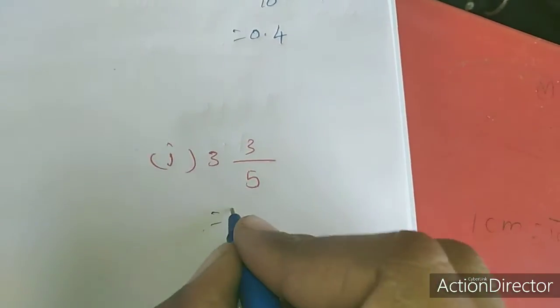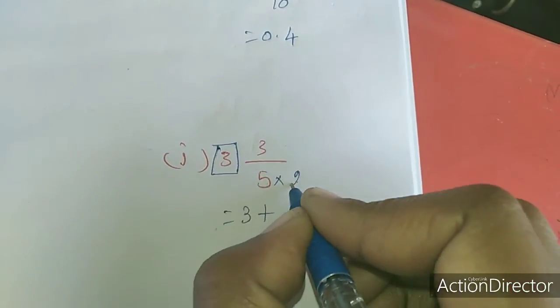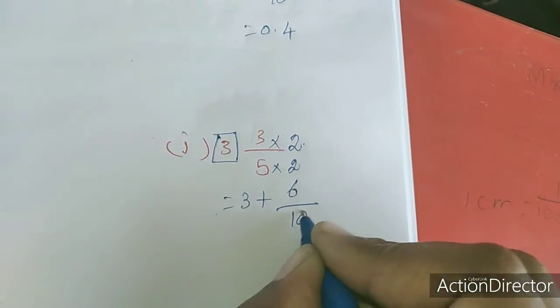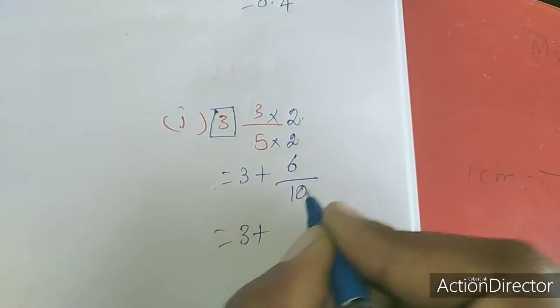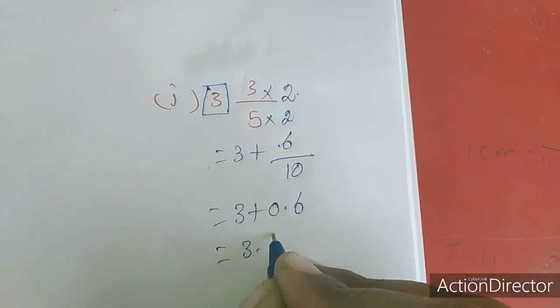Here it is 3 plus this number. Multiply by 5, 2 times 5 is 10, 3 times 2 is 6. 5 times 1 is 5. So 3 plus 0.6, which is 3.6.